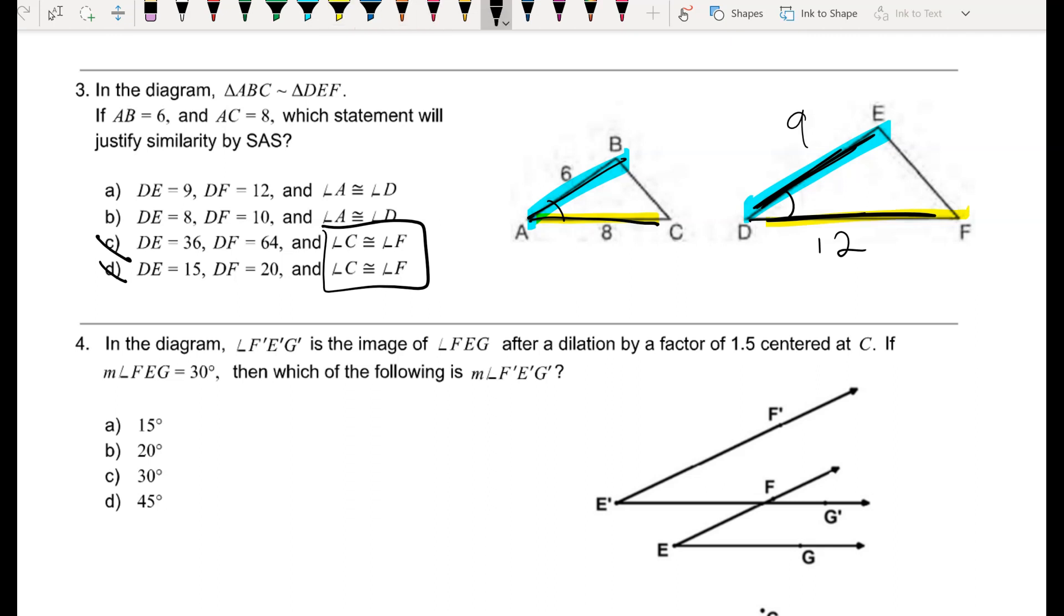I can set AB over DE and see if that's equal to my small side AC over its corresponding big side DF. So 6 over 9, is that equal to 8 over 12. If I cross multiply for both of those diagonals, I see that 72 is equal to 72, so those would be the side lengths that make those sides proportional. So I've got two proportional sides, and the angle between them is congruent.